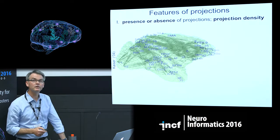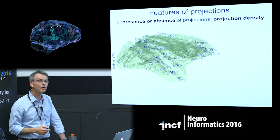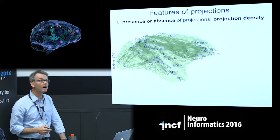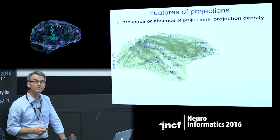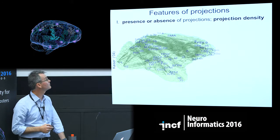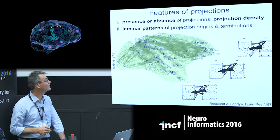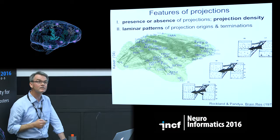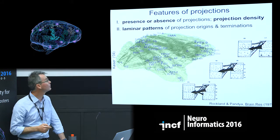The features we're interested in are very simple ones. There have been a number of analyses in recent years looking at complex aspects of network topology and network organization. We're interested in the most basic features of connectivity, such as the existence or absence of specific pathways between pairs of regions, as well as their density. We're also interested in constraining the characteristic patterns of laminar origin and termination in the cortex — these are the most fundamental features for any kind of modeling.